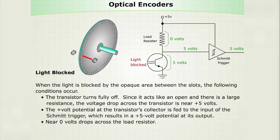When the light is blocked by the opaque area between the slots, the following conditions occur. The transistor turns fully off. Since it acts like an open and there is a large resistance, the voltage drop across the transistor is near positive five volts.